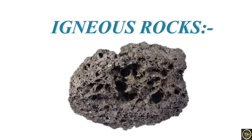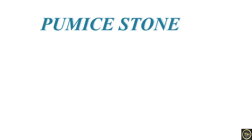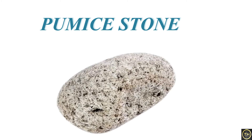Igneous rocks mostly appear hard and homogeneous, and they are heavy as well. We do not find fossils in these rocks. The Maharashtra Plateau and the Sahyadris are formed out of igneous rock. Basalt is a major example of igneous rock. Another example is pumice, which is formed out of volcanic froth. It is a porous rock and its density is quite low, so it can float on water.